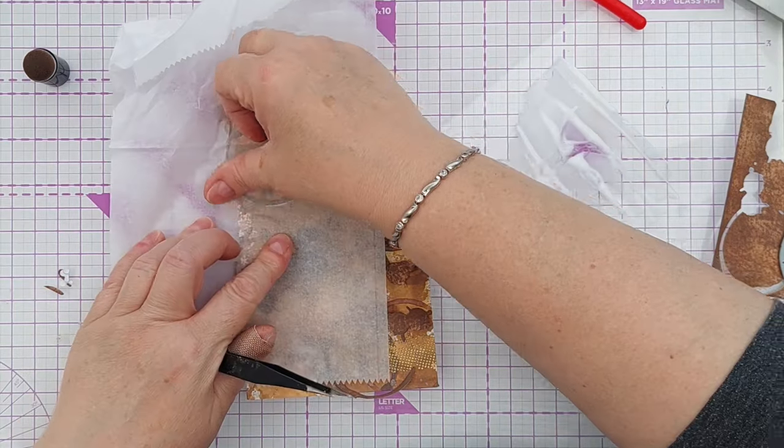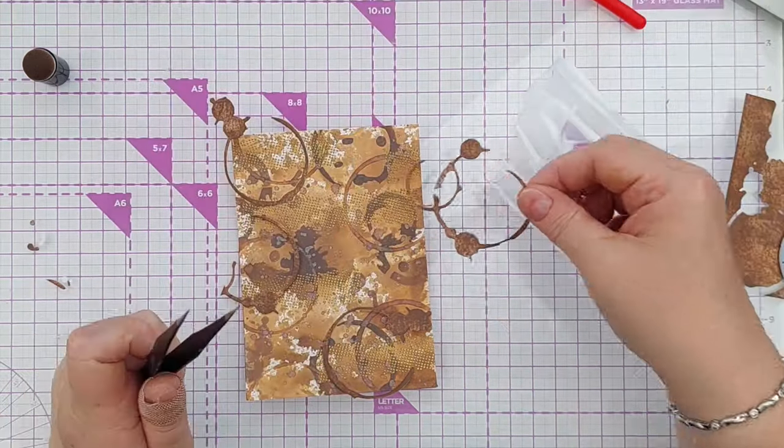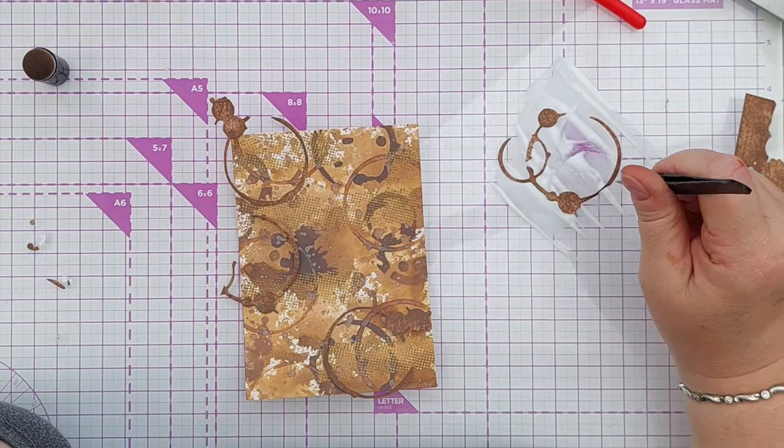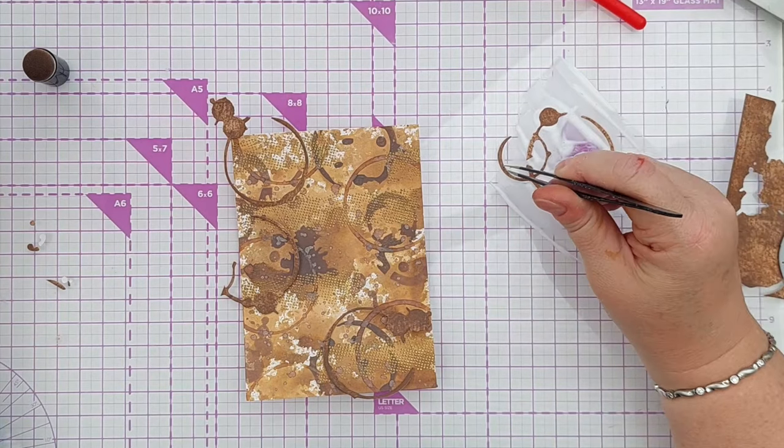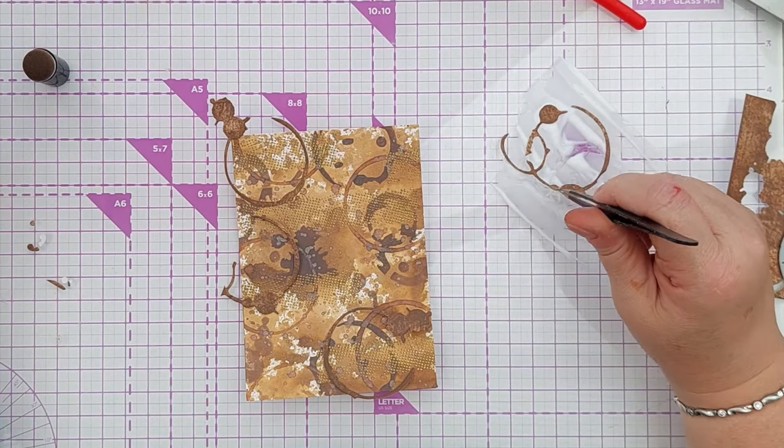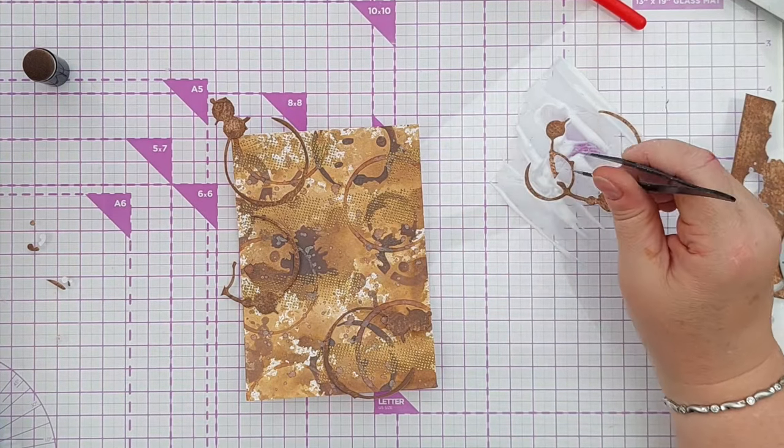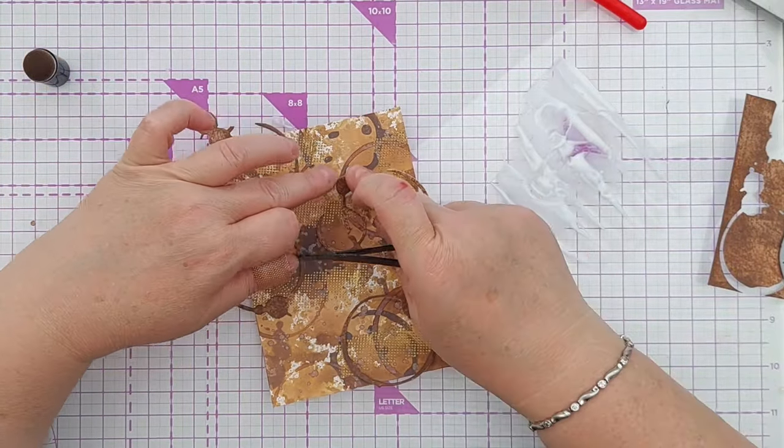Once they were stuck down, I did take some scissors and chop off the overhang. And then I used the overhang bits to add back into the background. So there's lots of visual texture going on and some physical texture as well, which I think is nice.